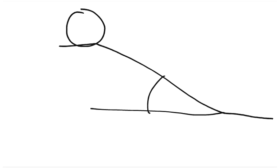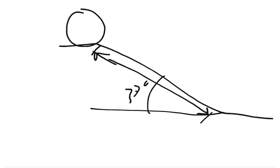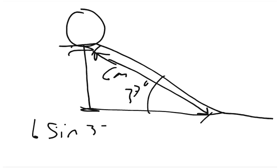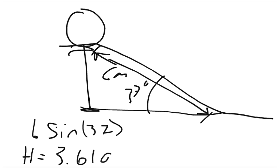We have here that this is 37 degrees. We know that the distance along the ramp is 6 meters. We need to know the vertical height, because we need to know the potential energy of the system. So we'll do 6 times the sine of 37 to find out the height, and we get that the height is equal to 3.6108 meters.